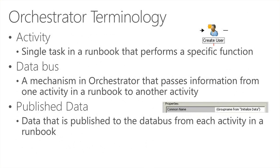A few more terms: an activity is a single task in a runbook that performs a specific function — for example, 'Create User' creates a user in Active Directory. The data bus is a mechanism in Orchestrator that allows you to pass information from one activity to another. You can consume the output of one activity in the next by using the data bus. Each activity publishes data to the data bus automatically, and you can also publish your own data using published data.